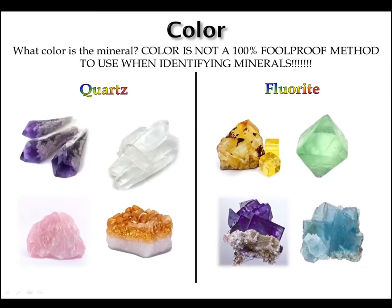Color is very important to note and most of the time it can lead you in the right direction for mineral identification. But color is not a 100% foolproof method. On the left we can see four different color varieties of quartz, and on the right we see four different color varieties of fluorite. You should always document the color; however, if all other observations and tests point to another mineral except the color, don't disregard that mineral based on color alone.